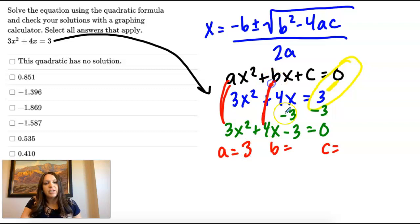b is the number next to x, which is 4. And c is the one all by itself, which is negative 3, because we have to subtract it over.